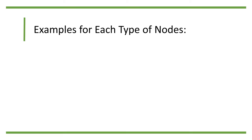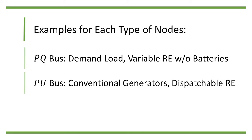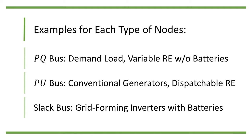Let's take a look at what are usually modeled by each type of nodes. We usually model demand nodes and variable renewable energy without batteries with PQ buses. Meanwhile, conventional generators and dispatchable renewable energy are usually modeled as PU buses. Finally, grid forming inverters with batteries are examples for slack buses.